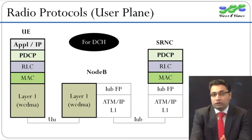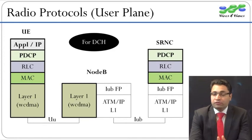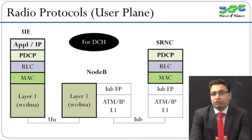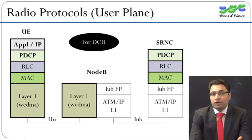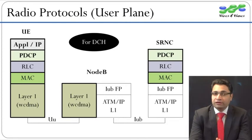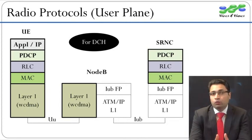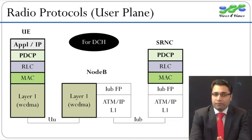In Release 99, TTI can be 10, 20, 40 or 80 milliseconds for DCH channels. Along with transport blocks, the MAC layer also passes a Transport Format Indicator, or TFI, to the physical layer, which describes the decision made by the MAC layer.